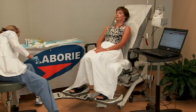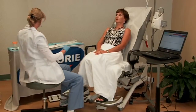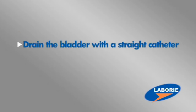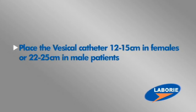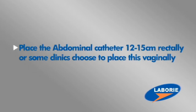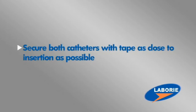It's now important to prepare the patient for the filling phase of the test. First, drain the bladder with a standard straight catheter, noting the volume as post-void residual. Place the vesicle catheter 12 to 15 centimeters in females or 22 to 25 centimeters in males. Place the abdominal catheter 12 to 15 centimeters rectally, or some clinics choose to place this vaginally. Secure both catheters with tape as close to insertion as possible.